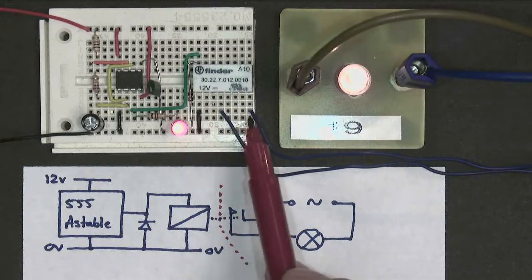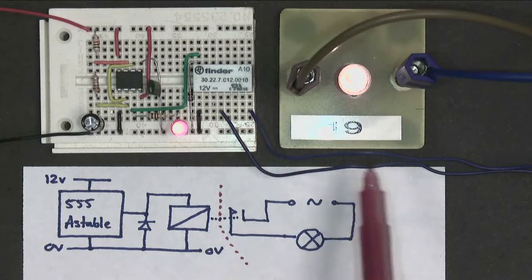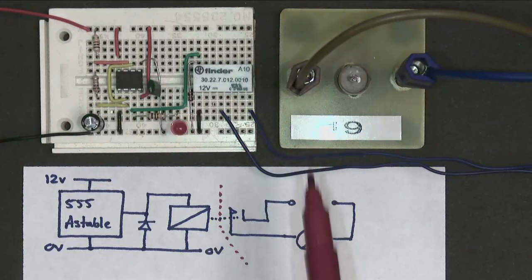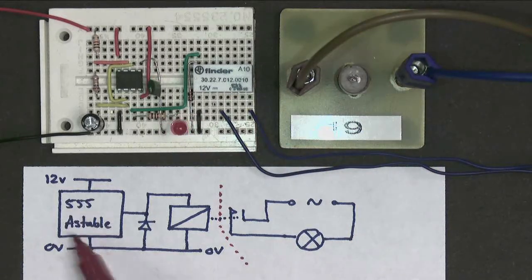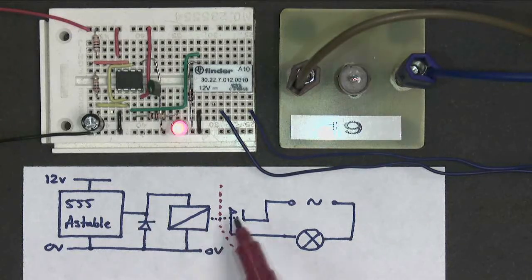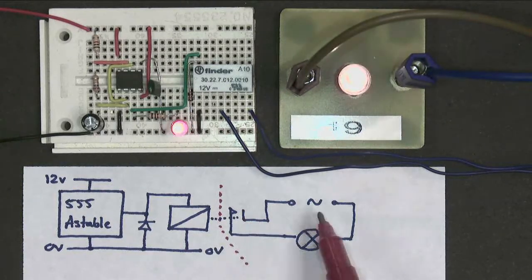The relay contacts, the switches, are connected through these blue wires to my light bulb, which is running off my AC supply. So things to note, the astable is controlling the relay, the relay controls the switch, the switch controls the light.